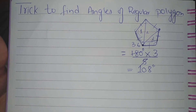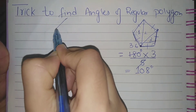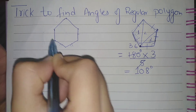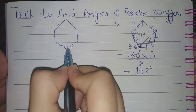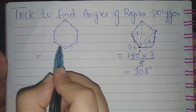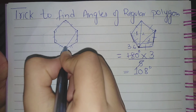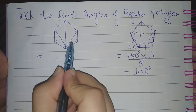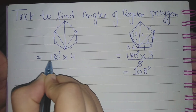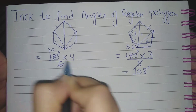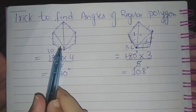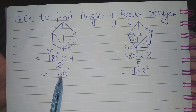Now considering another polygon having six sides — a hexagon. In this polygon there are six sides, all equal, and each angle will also be equal. By this concept, take a vertex and join it with all the other vertices. How many triangles are there? One, two, three, four — there are four triangles. The sum of angles is 180 degrees, and there are six sides. So 4 times 180 divided by 6 is 120 degrees. Each angle in this hexagon is 120 degrees.